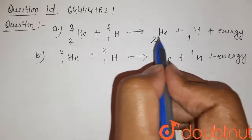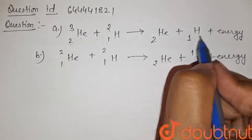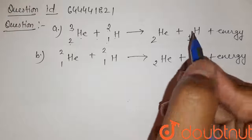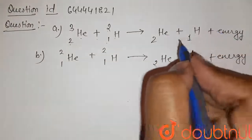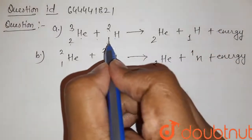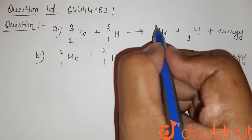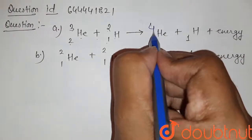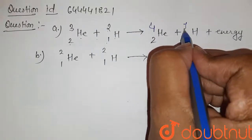So it is converted into Helium 2 and hydrogen 1 plus energy. So when it is finally converted into this, in this reaction, the Helium is converted into Helium 4 and hydrogen is converted into hydrogen 1.